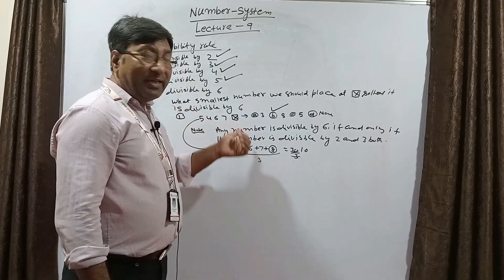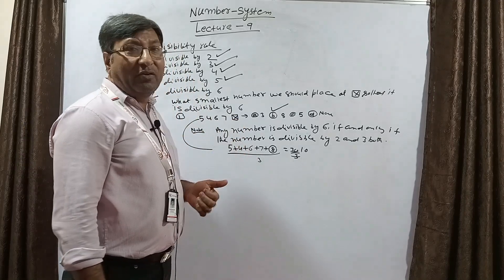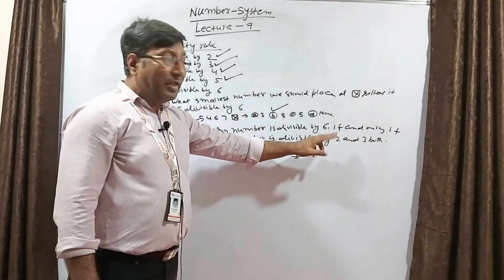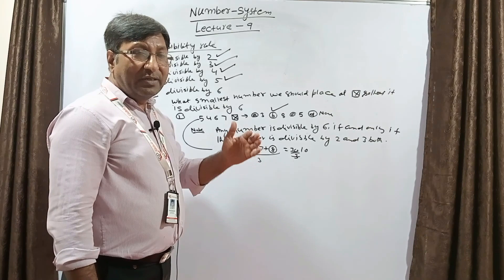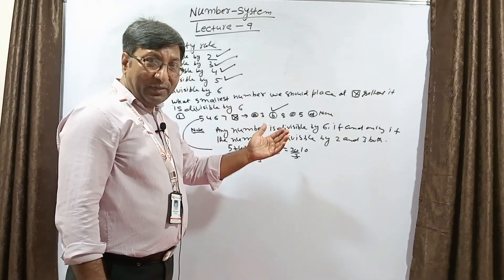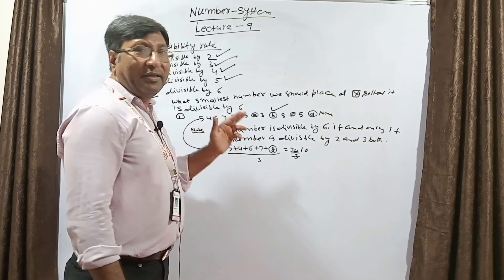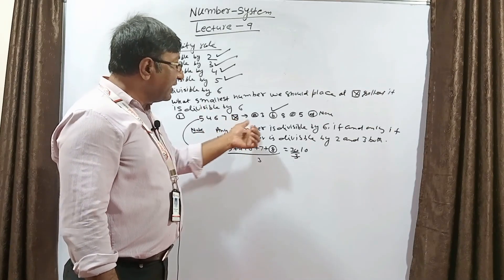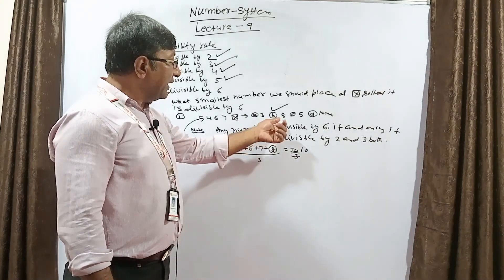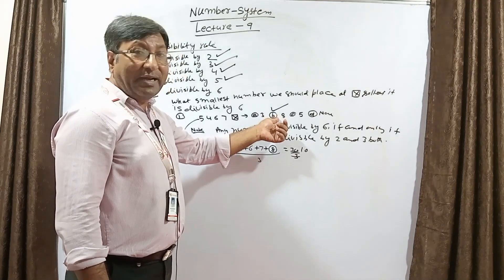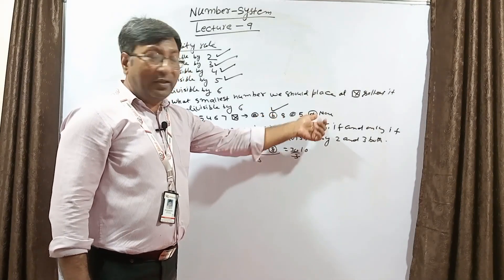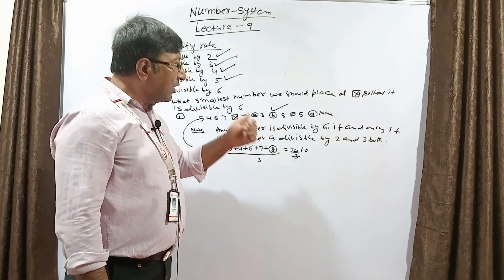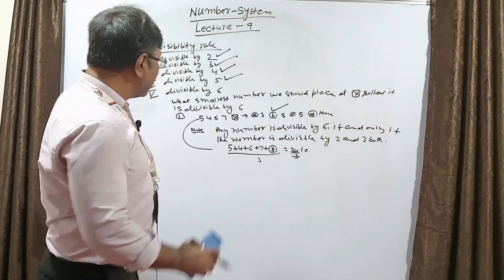So the simple trick is: any number is divisible by 6 if the unit digit is 0, 2, 4, 6, or 8 (divisible by 2), and the sum of the digits is divisible by 3. If the blank is in the unit place, that number should be even. Here the number is 8, so we place 8 and check the sum — sum is 30, divisible by 3. So our correct answer is option B, that is 8.